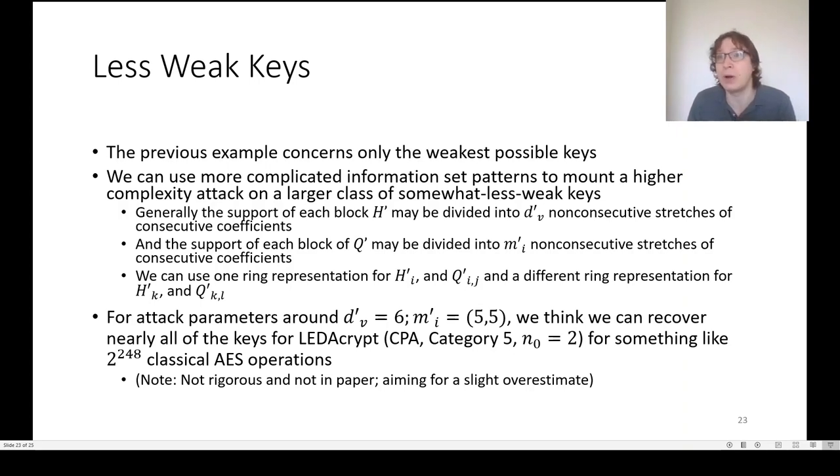We'll talk about one other extension of the attack, which is, we can attack a broader set than the weak keys we've been looking at. Now, the downside of this is that our h primes and q primes will need to be somewhat sparser because we can't just use a single block of consecutive coefficients. But we can use a small number of blocks of consecutive coefficients in each block of the public key. We did out an example, which was too long and not quite rigorous enough to put in the paper. But we were trying to overestimate slightly the complexity. And we found that probably you're reducing the security level of the CPA parameters from 256 bits of security to 248 or perhaps even a little bit less.